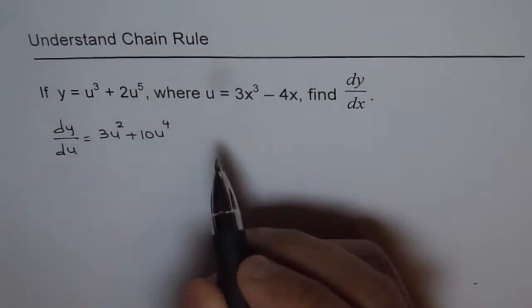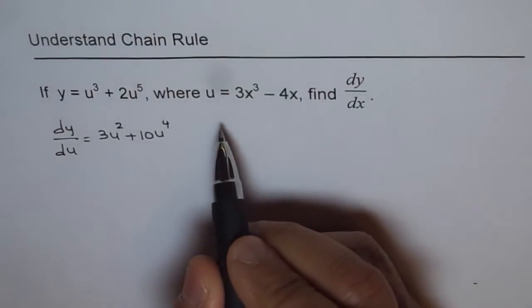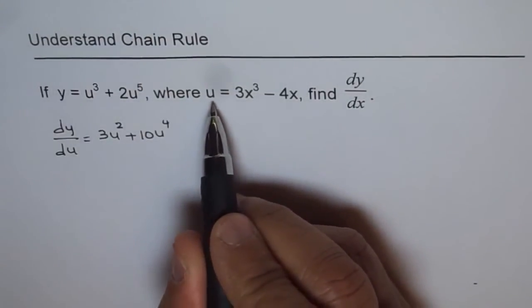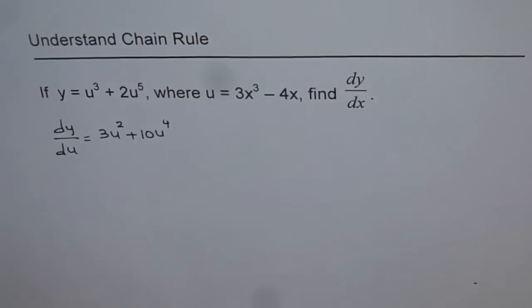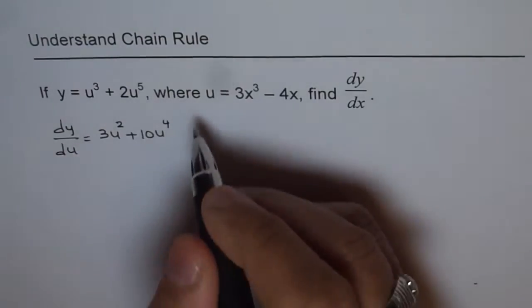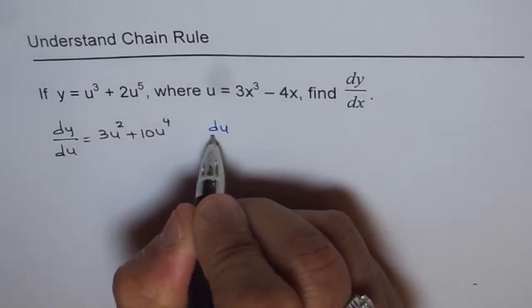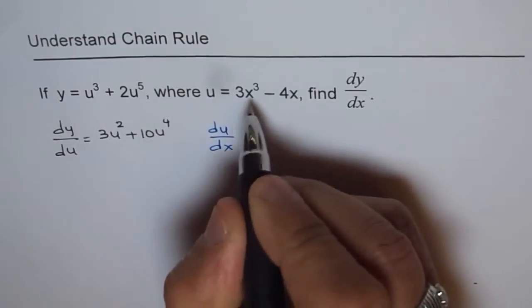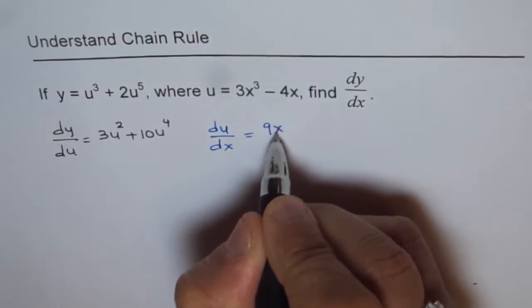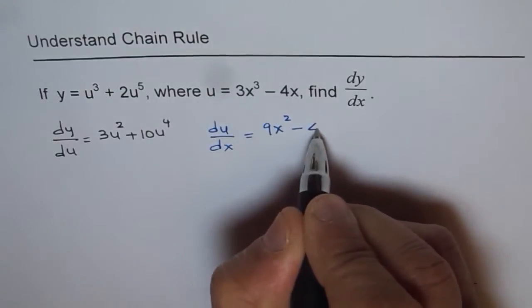Similarly, we will apply the same power rule and differentiate u with respect to x. We get du over dx equals 3 times 3, 9x squared minus 4.